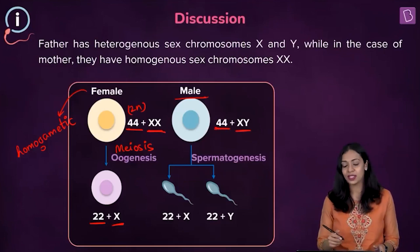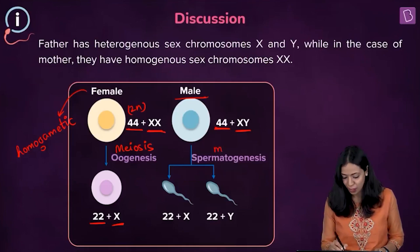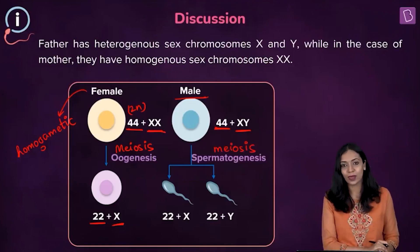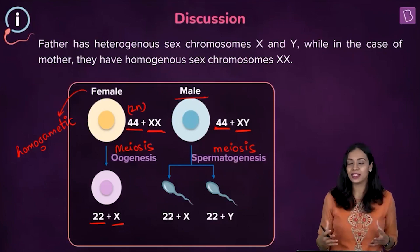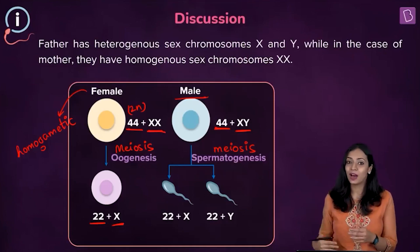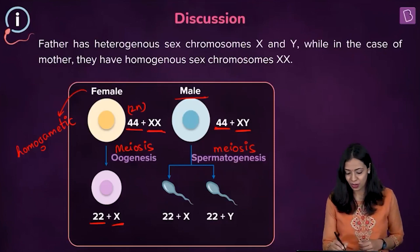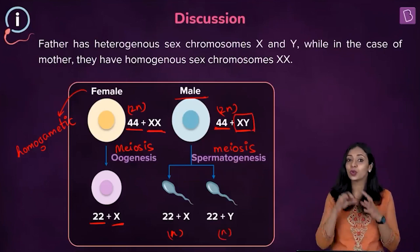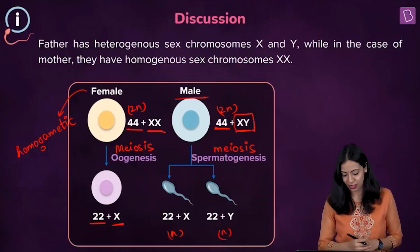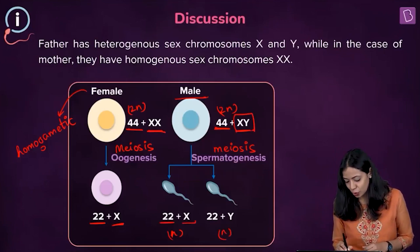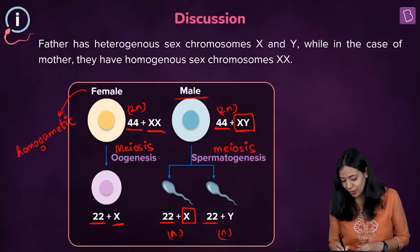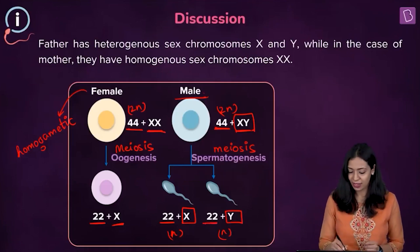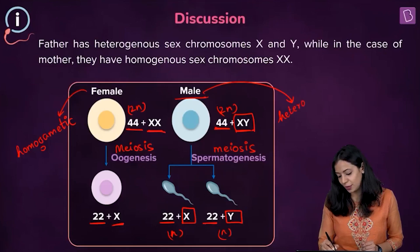During spermatogenesis, meiotic division takes place similarly to oogenesis in females. After meiosis, the resulting cells have half the number of chromosomes. Because males have two different types of sex chromosomes, two different types of gametes can be formed: one with 22 autosomes plus the X chromosome, or one with 22 autosomes plus the Y chromosome. Because more than one type of gamete can be produced, males are said to be heterogametic.